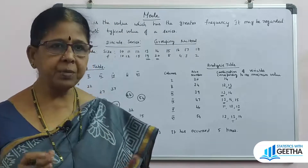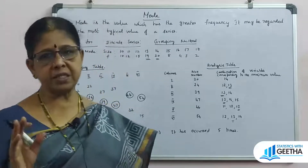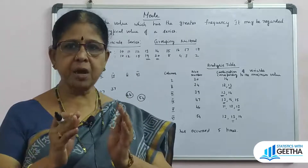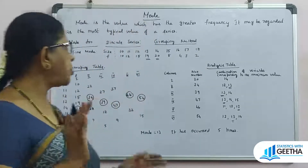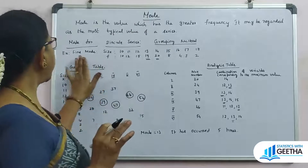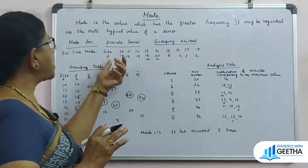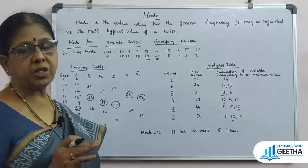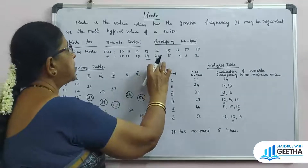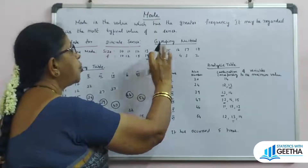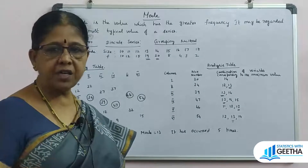In the grouping method, there are two tables: the grouping table and the analysis table. Looking at an example with a discrete series of size and frequency, the maximum frequency is 20 — so at first glance, the mode appears to be 14. However, because the next frequency is 19, there is very little difference, so we need the grouping method.